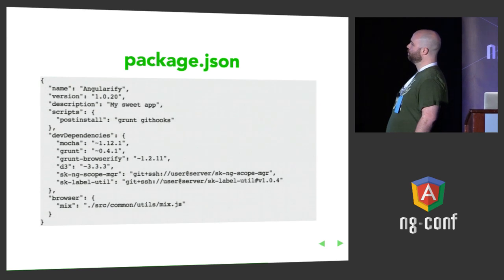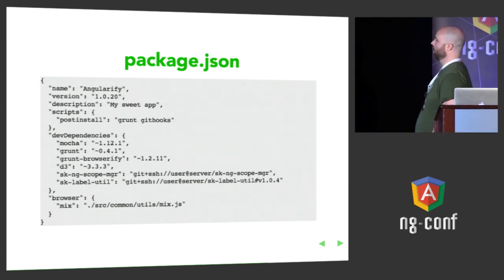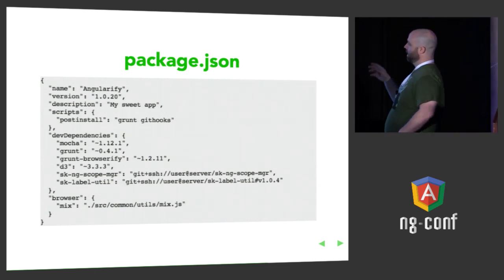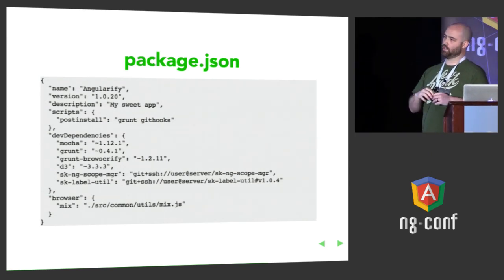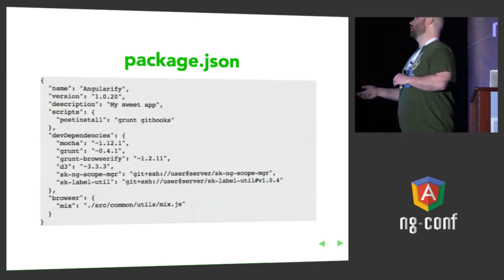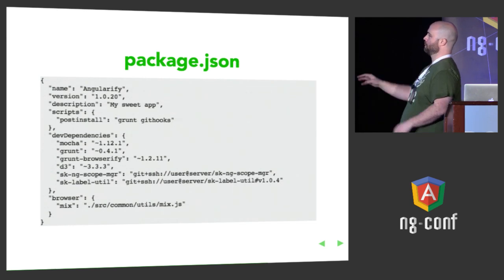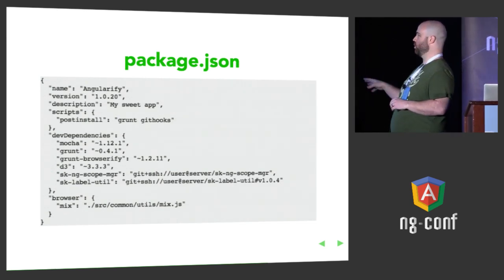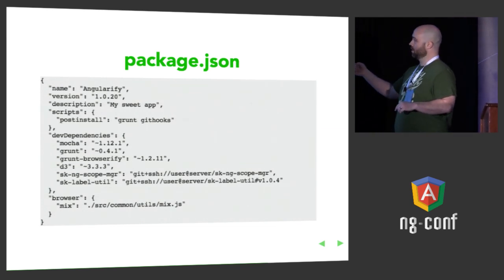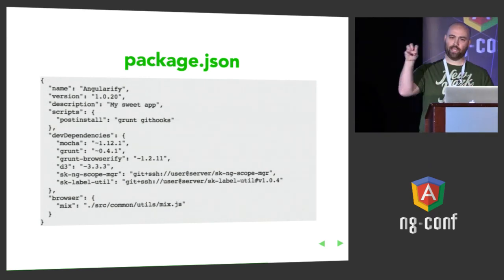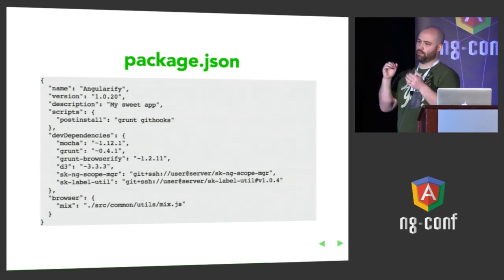Then just some regular dependencies like Mocha, Grunt, Browserify, D3. These last two, though, are actual modules that we wrote for our application but that we know will be useful outside of it. We can't publish them to NPM because they're internal code, but we broke them out, set them up in their own repository, and then we can install them like any other module, including specifying the version number. It's a really easy way to break your app into smaller pieces — you build big things out of a bunch of smaller things.